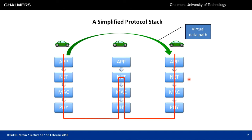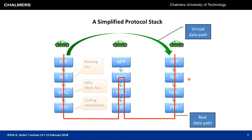The number of layers is debatable — we might have seven, five, or four layers depending on the reference. The different layers have different functions: the network layer handles routing, the medium access control layer handles retransmission protocols and medium access, and the physical layer is responsible for coding, modulation, and other functions.